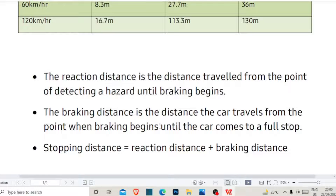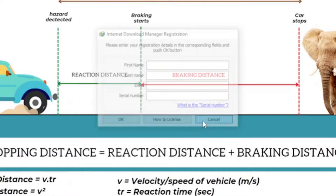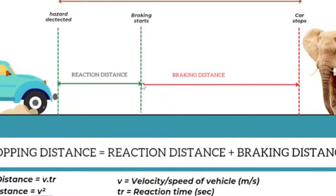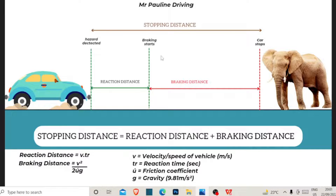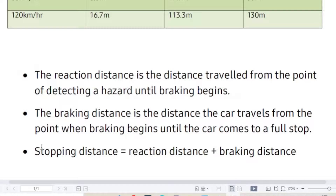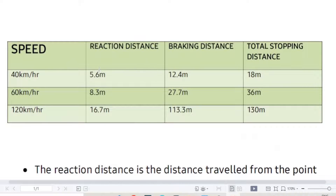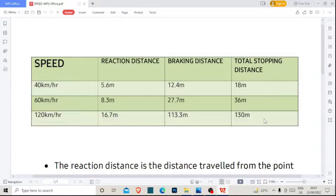The braking distance is the distance the car travels from the point when braking begins until the car comes to a stop. So from the point you press the brakes until the car fully stops — that is the braking distance. The stopping distance is simply the sum of both: reaction distance plus braking distance. From the table you can see: 5.6 plus 2.4 gives 8 meters, and other values like 18 and 36 meters.